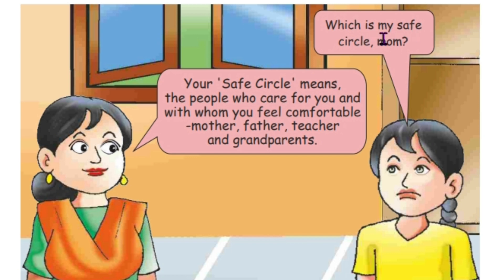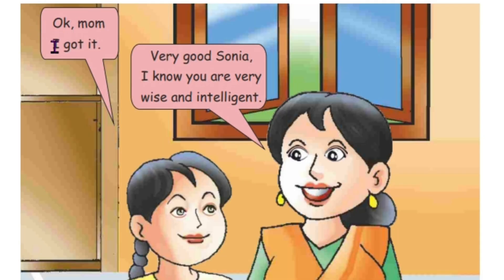Which is my safe circle, mom? Mataji, merah surakhyat kera kera hai. Your safe circle means the people who care for you and with whom you feel comfortable — mother, father, teacher and grandparents. Tohadda surakhyat kerae toh paav, oh log je re tohaddi dek paal kar dehan, mathe jinna vich tu si araam nasoos kar deho, ji mein maata pita adhyapap, tohadde dhadhadadi. Okay mom, I got it. Thik hai mataji, mein nou pata lag gya.